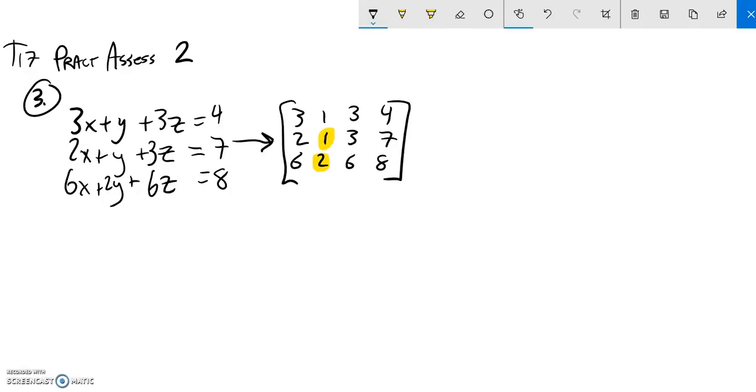So this first one, to make this a zero, I'll just go row one minus row two and put that into row two. And then to make this a zero, I'll go row three minus two times row one and put that into row three.